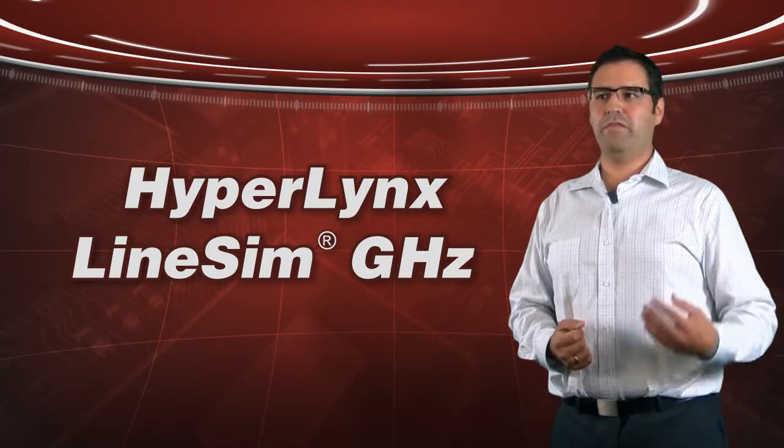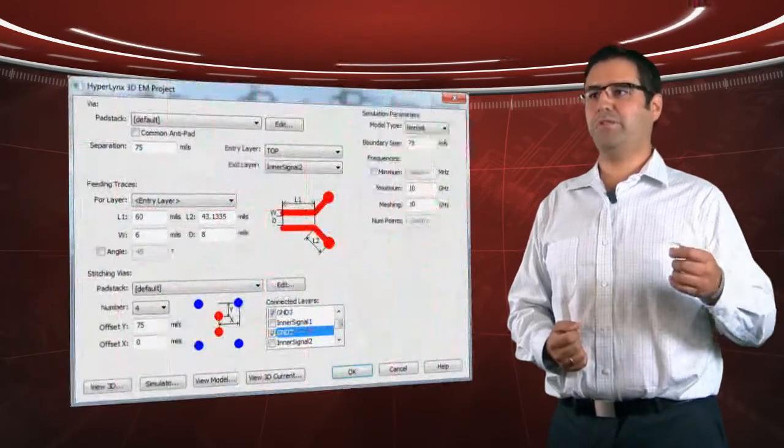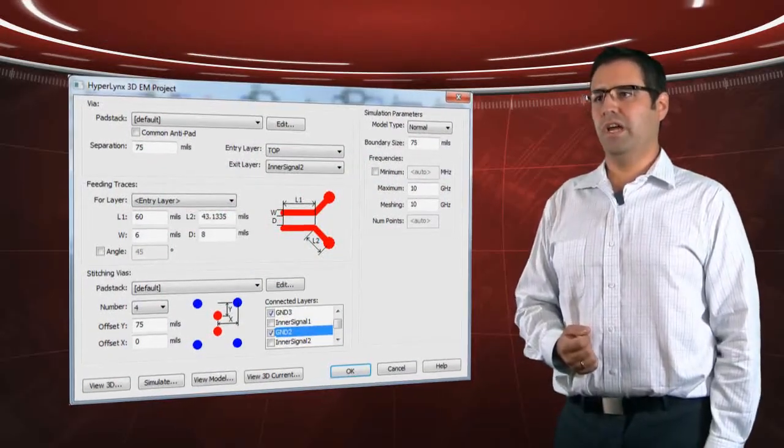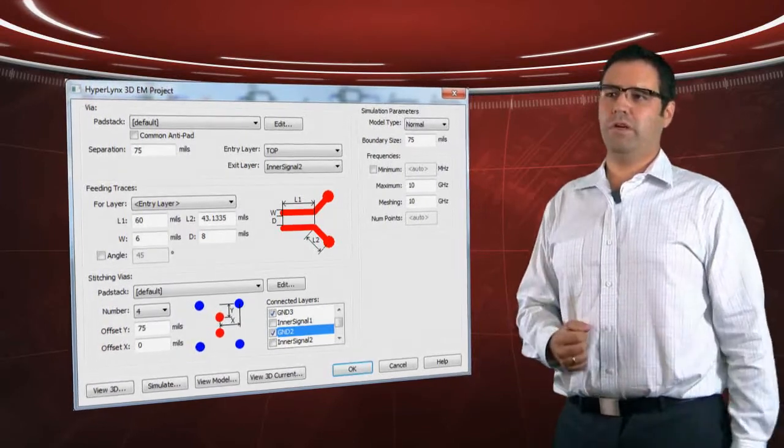Another integrated technology is in the pre-layout environment where we have vias with a little wizard that helps you design the via structures. And that's built in for doing 3D modeling within HyperLynx GHz line sim.